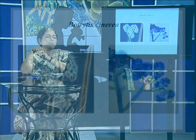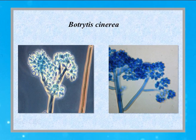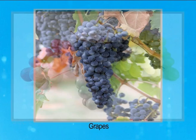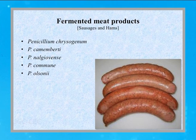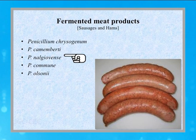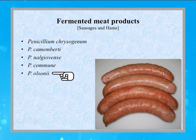A very important mold used in the production of wine is Botrytis cinerea. This causes fermentation of the sugar present in grapes, leading to the formation of a sweet white wine with a characteristic flavor and aroma. There are also many fermented meat products such as sausages and meats which can be fermented with the help of different species of penicillium, including Penicillium chrysogenum, Penicillium camembertii, Penicillium nalgiovense, Penicillium commune, and Penicillium aurantiogriseum. These represent the useful nature of mold in the food industry.